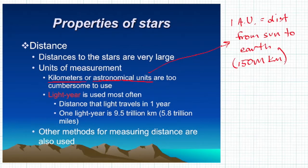But even that, if we measure the distance between stars with an AU, it still is going to be a very, very big number. So we need an even bigger distance, and that distance is the light year. Now, it sounds like an amount of time, but it's actually a measure of distance. It is the distance that light travels in one year.